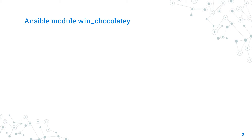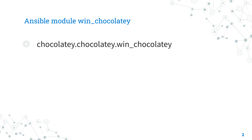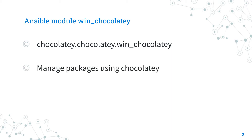Today we are talking about the Ansible module win_chocolatey, to automate the software installation process. The full name is chocolatey.chocolatey.win_chocolatey — so there is a lot of Chocolatey here — which means it is part of the collection distributed by Chocolatey. It manages packages in Windows using Chocolatey Package Manager, and it's the Windows correspondent of the Ansible package module.